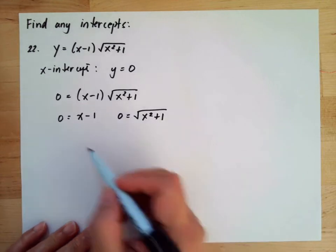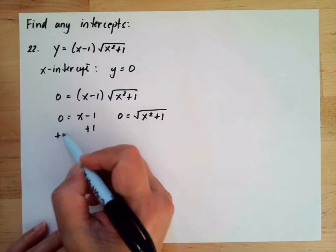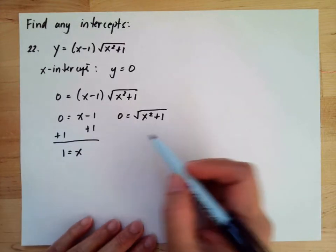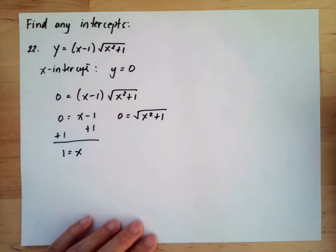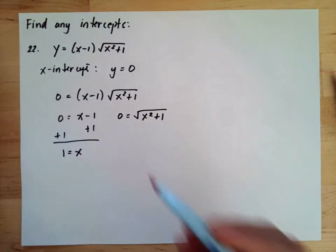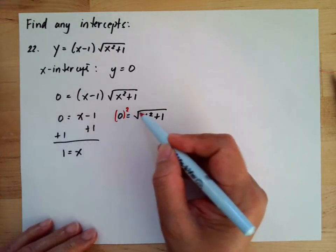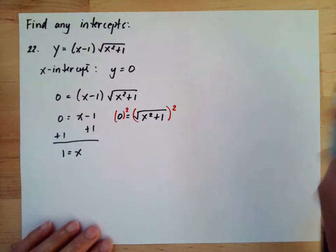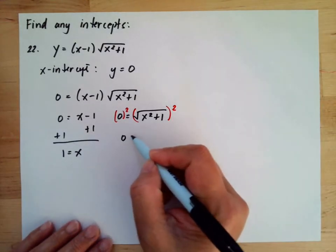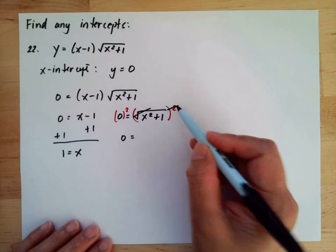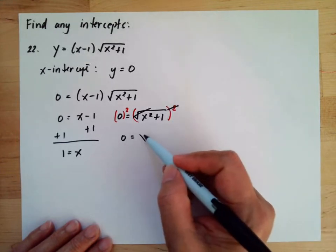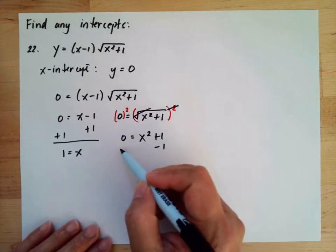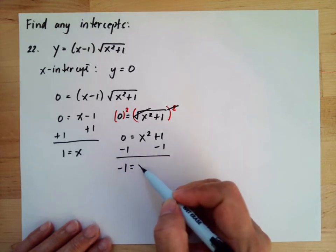For the first factor, we add 1 to both sides, so we have x equals 1. For the second factor, we square both sides to remove the square root, so 0 squared is still 0, and the square root and the square cancel out, giving us x squared plus 1. Then subtracting 1 from both sides gives us negative 1 equals x squared.